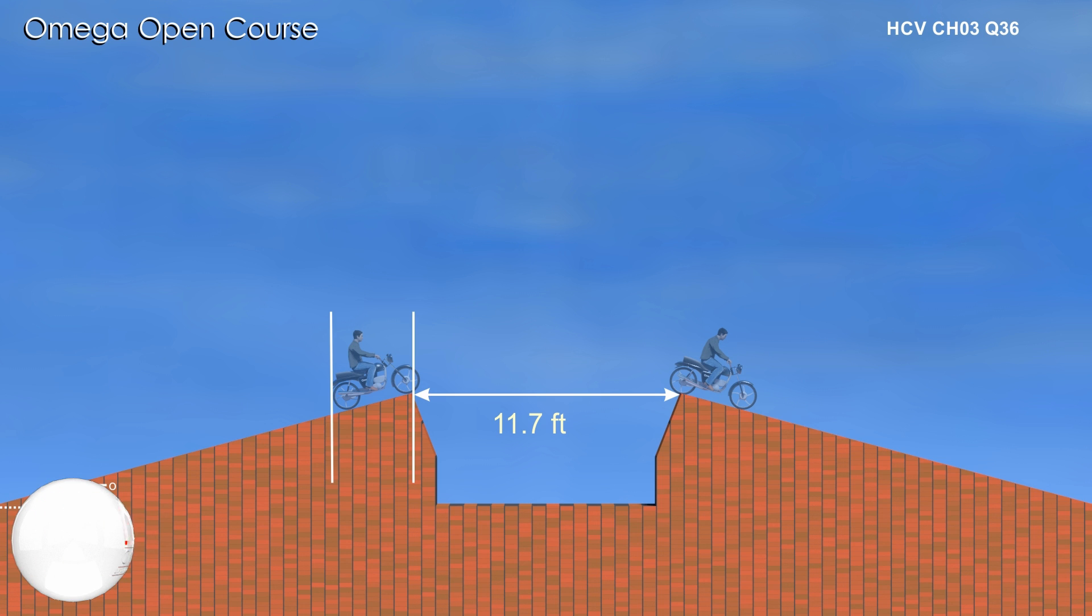The length of the bike is 5 feet. The bike is inclined at an angle 15 degrees with the horizontal. Therefore, the horizontal length of the extent of the bike is 5cos15°. Thus, the range of the projectile is 11.7 plus 5cos15°.